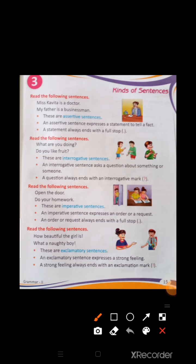This is lesson number 3: Kinds of Sentences. In lesson number 2, we learnt about sentences — a sentence is a group of words that makes complete sense. In this chapter, we will learn about kinds of sentences. Read the following sentences: Ms. Kavita is a doctor. My father is a businessman. These are assertive sentences. An assertive sentence expresses a statement to tell a fact. A statement always ends with a full stop.